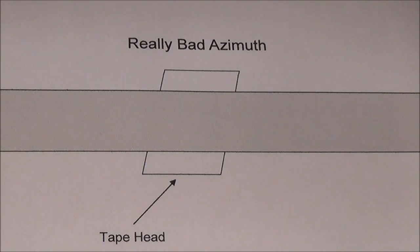Now this is an example of really bad azimuth. In reality, you probably won't see it that bad. It will just be off by a tiny amount. But that tiny amount will make a lot of difference as far as high frequencies are concerned.